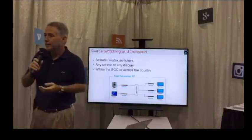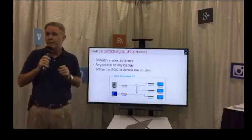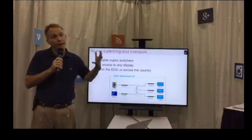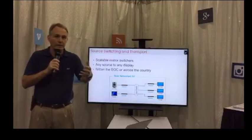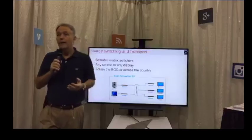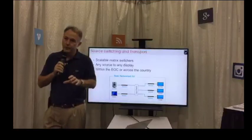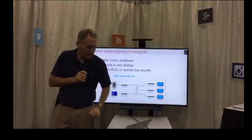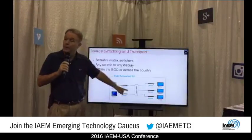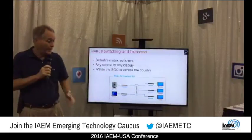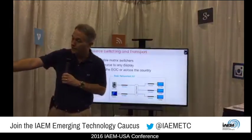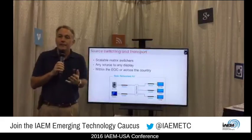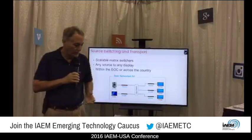When it comes to moving signals around in your EOC, there's a new technology called scalable matrix switchers — a network-based switching technology. Traditionally, a large AV switcher would have, say, 16 inputs and 16 outputs, and adding a 17th input meant buying another switcher. But with a scalable matrix switcher using encoders and decoders, you just add another encoder. As you can see on the screen, we have encoders, a Layer 3 network switch, and decoders. We're actually running this system here today — the computer is plugged into an encoder, it goes through the network switch, and the stream routes out to the different monitors. To add another input or output, just add another encoder or decoder.